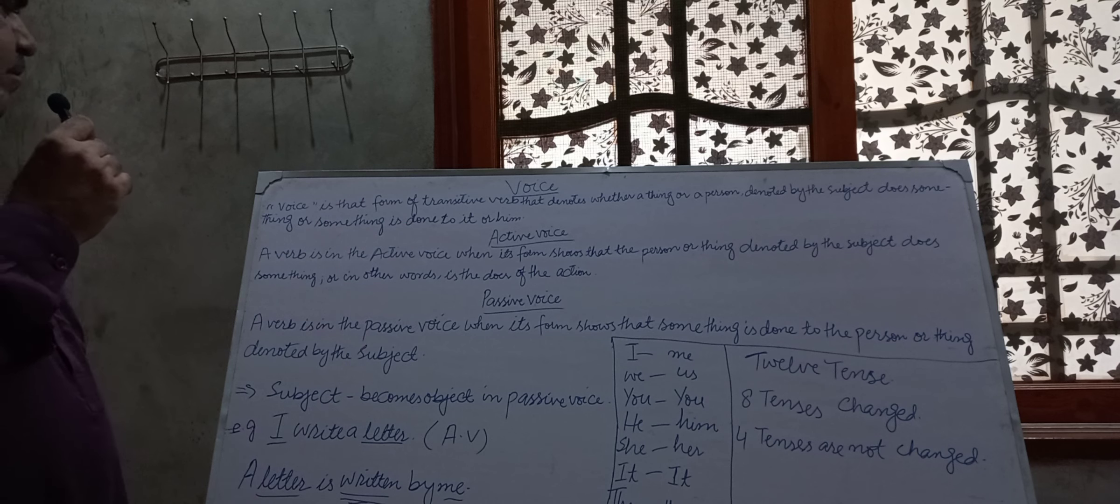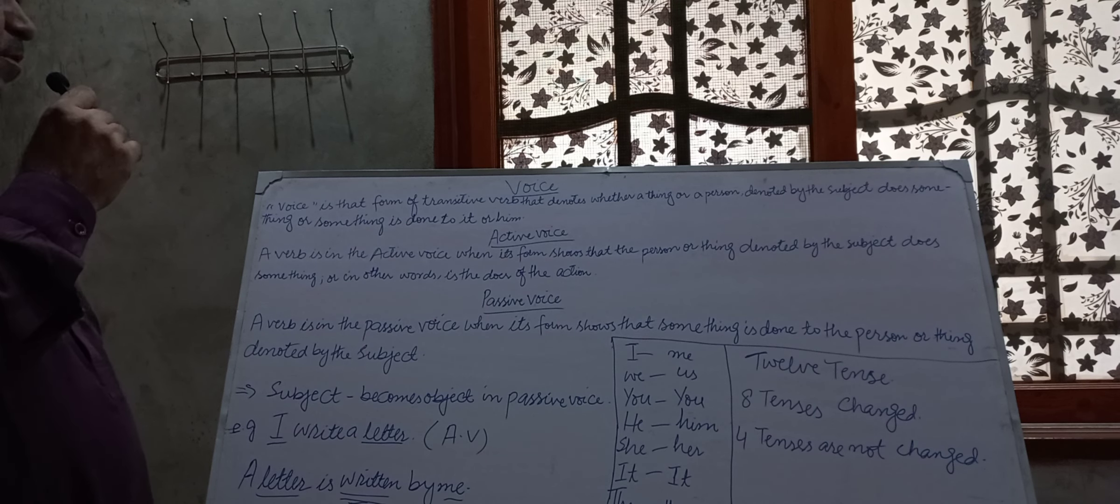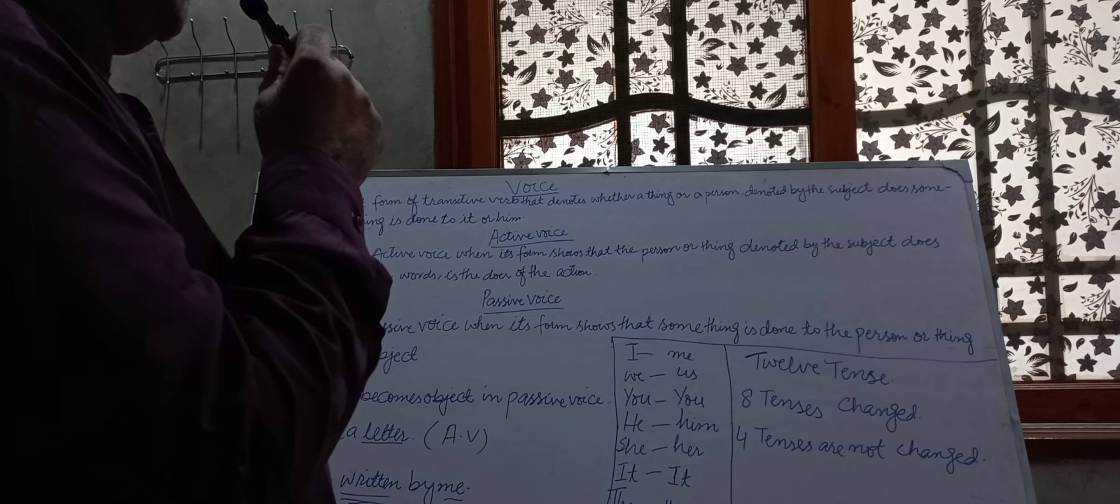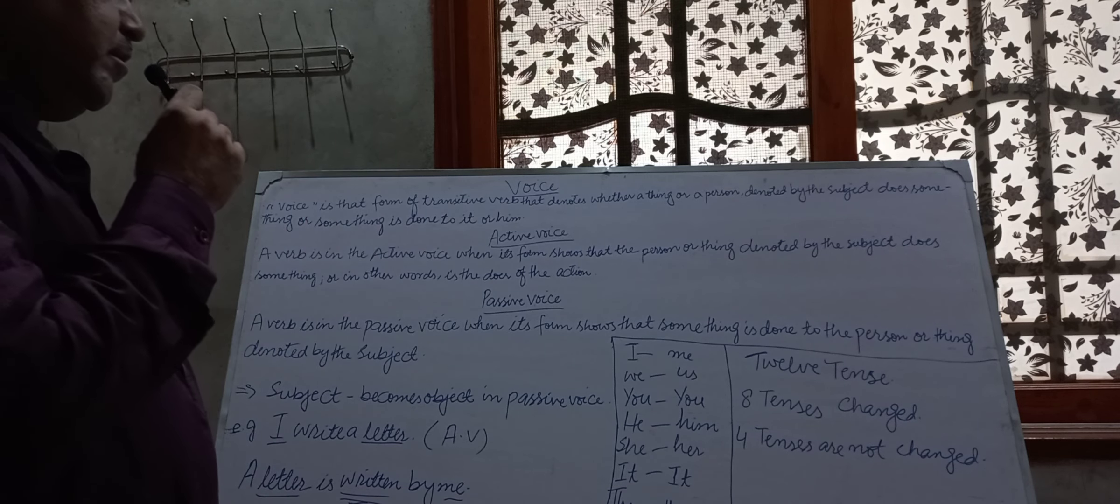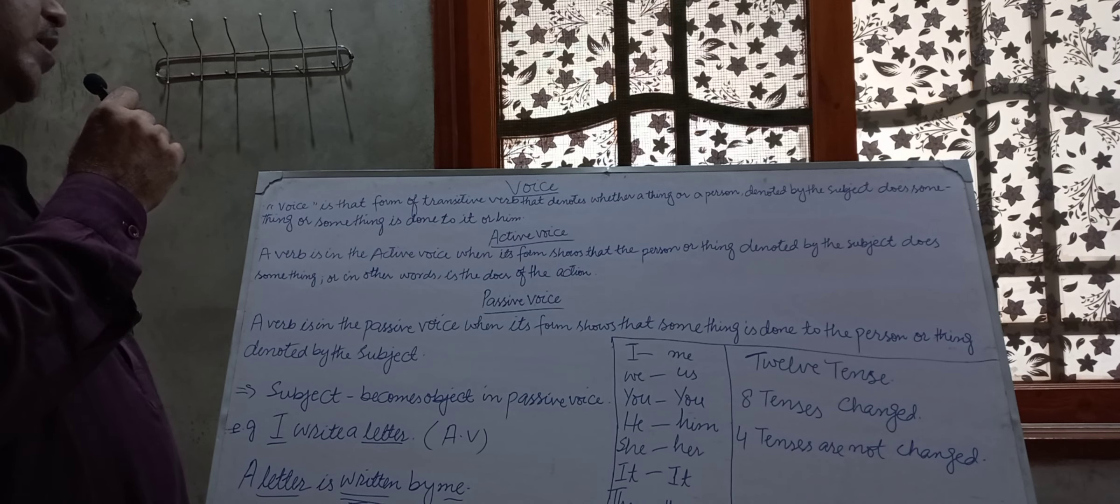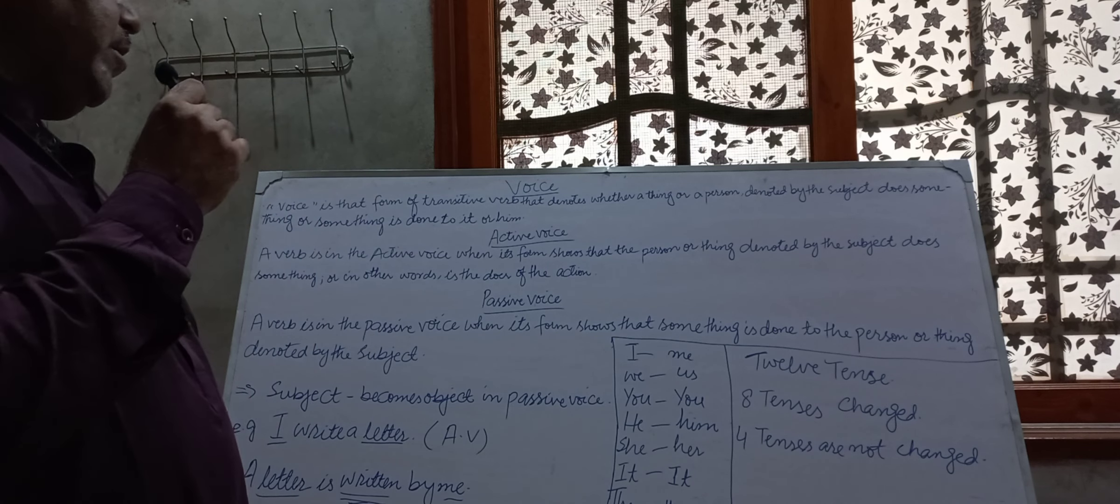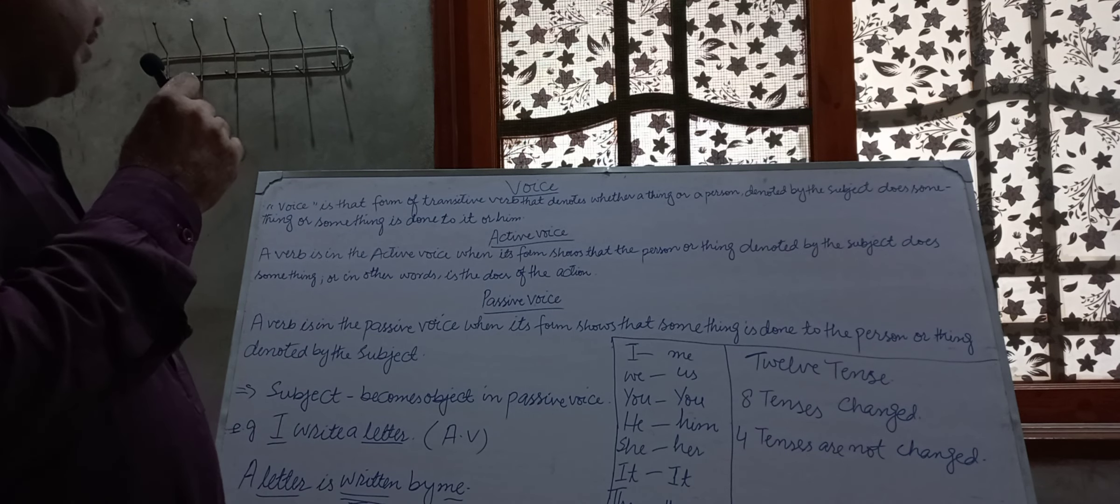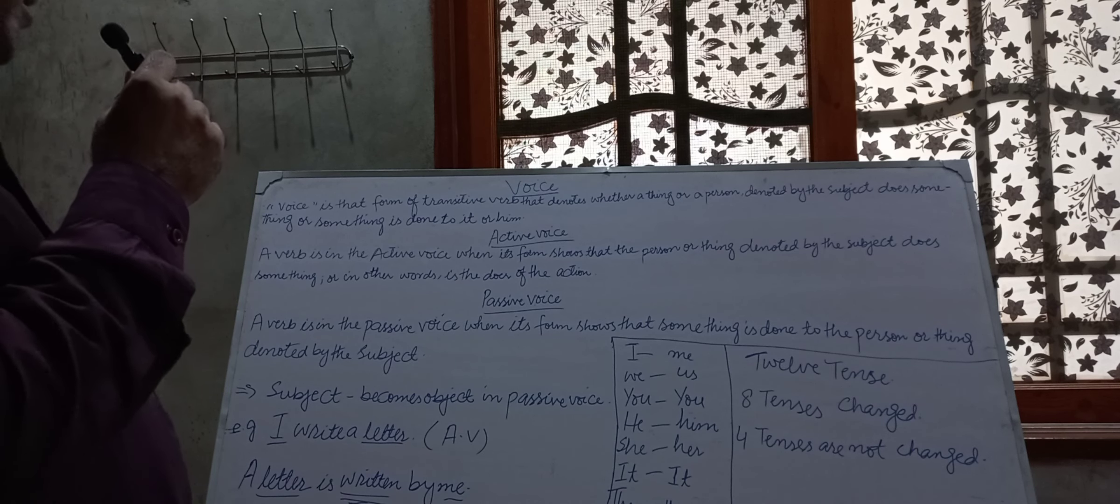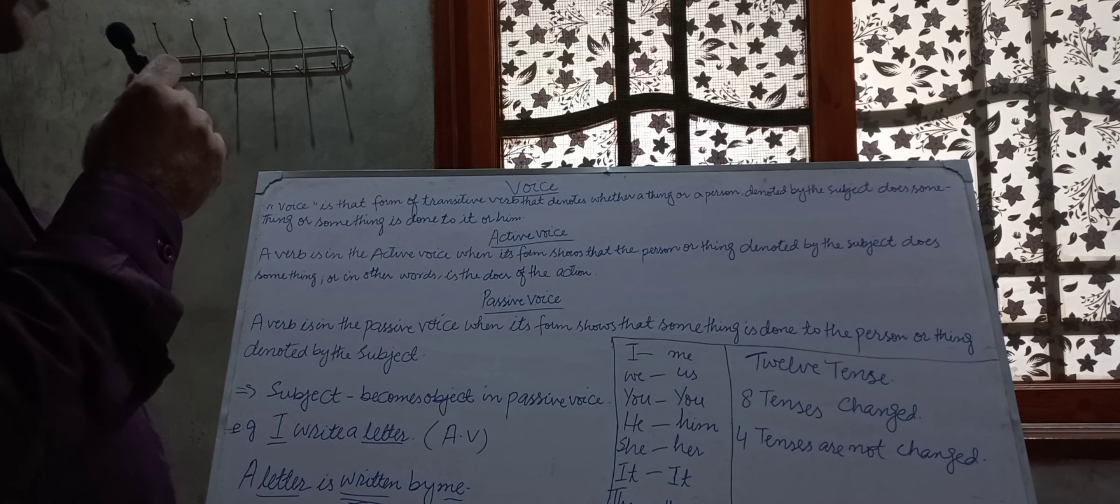First of all, I define active voice. A verb is in the active voice when its form shows that the person or thing denoted by the subject does something, or in other words, is the doer of the action.